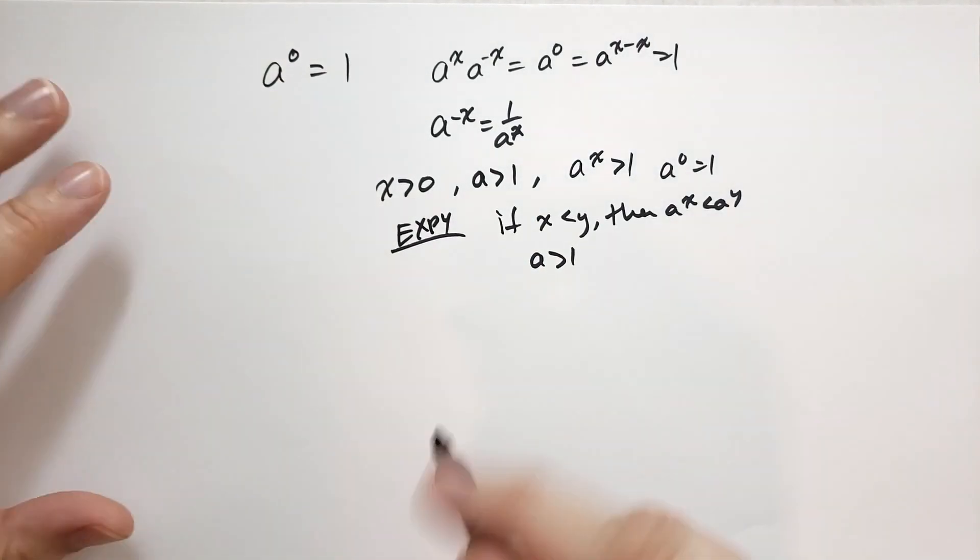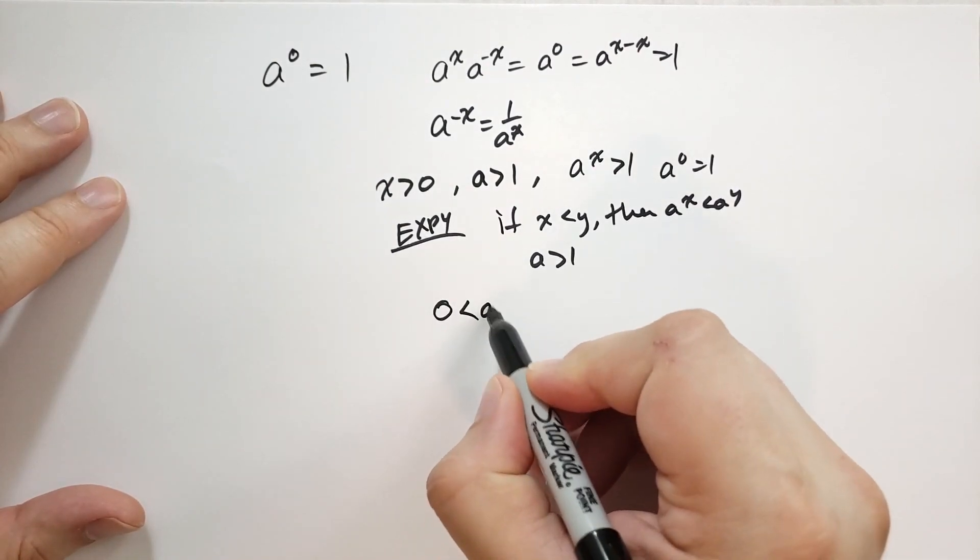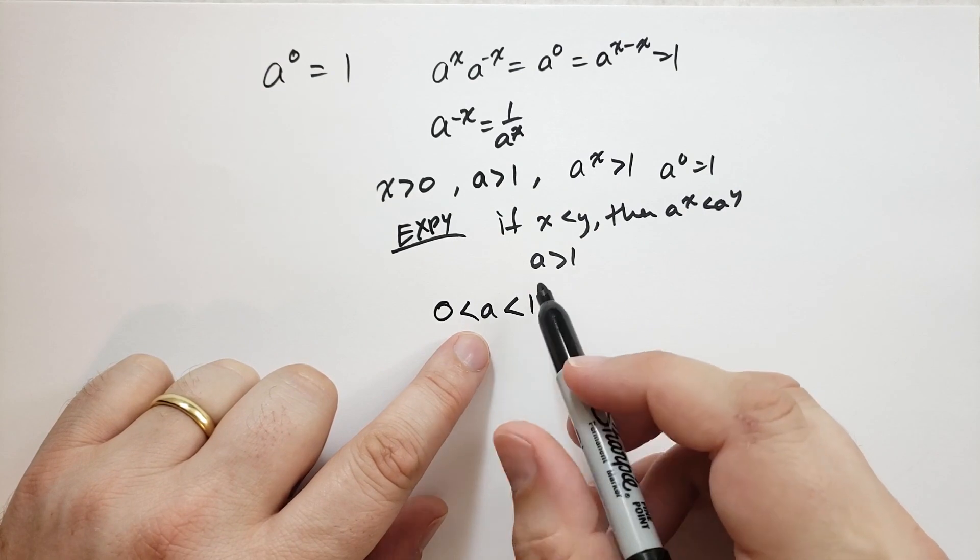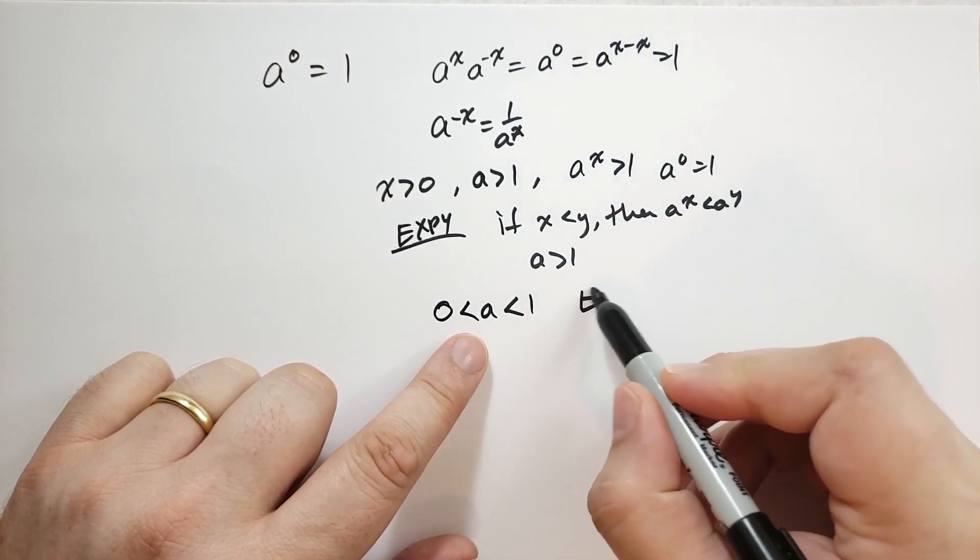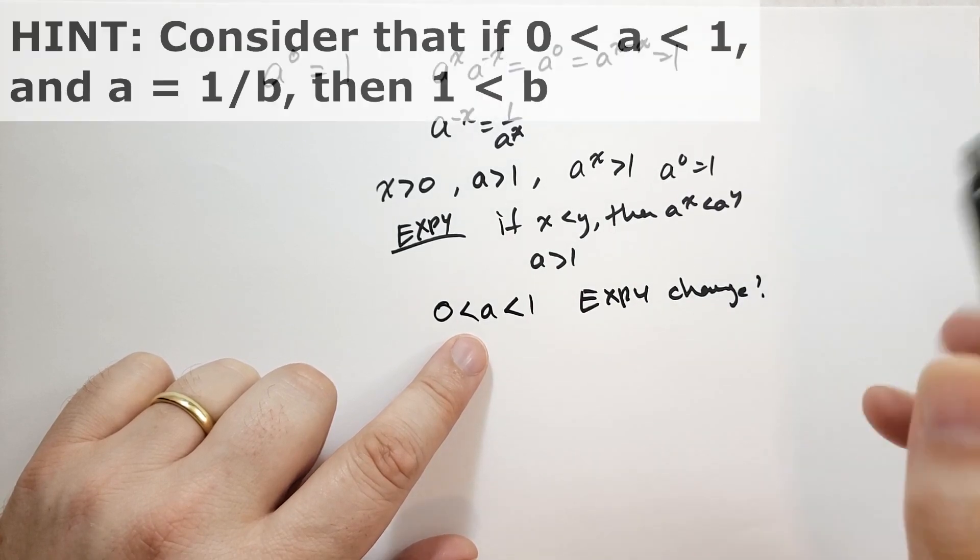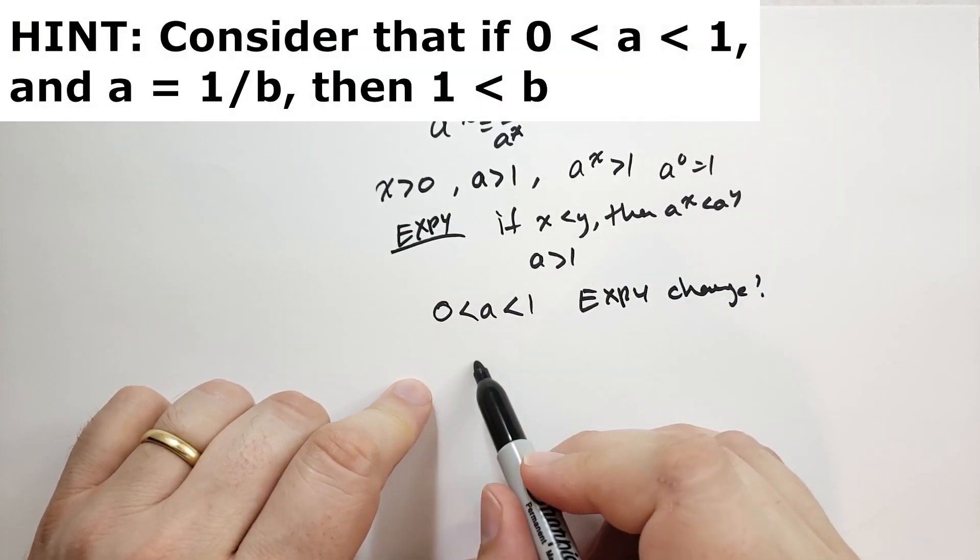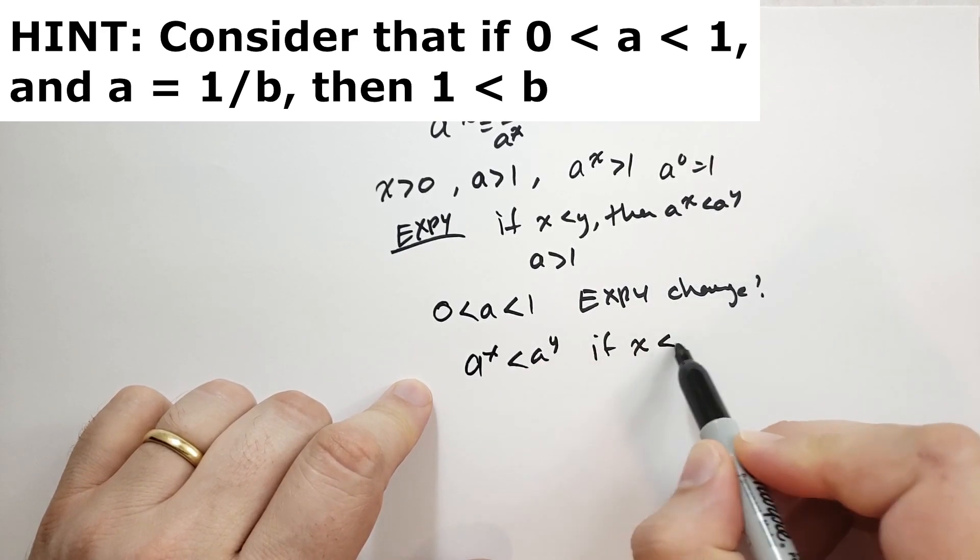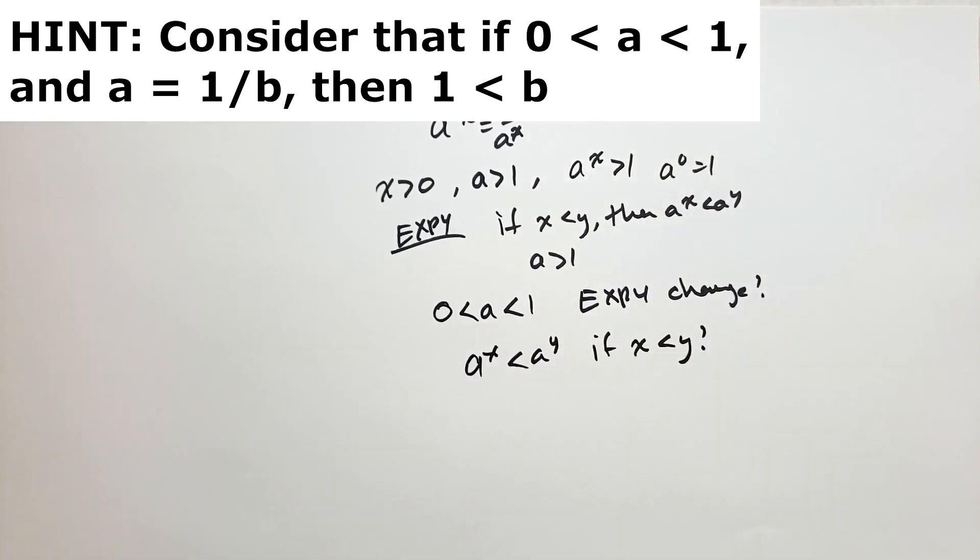What if we have 0 is less than a is less than 1, so a is positive but it's less than 1. How would EXP4 change? Is it still true that a^x is less than a^y if x is less than y? You'll have to do some experiments for yourself to see how that works.